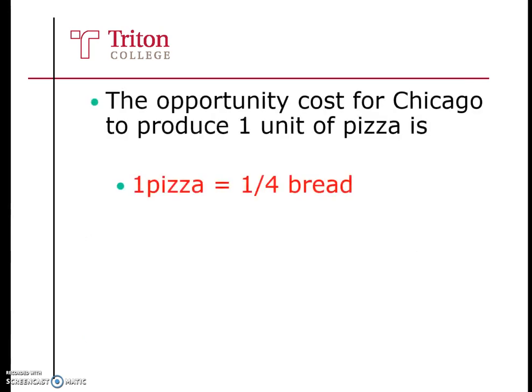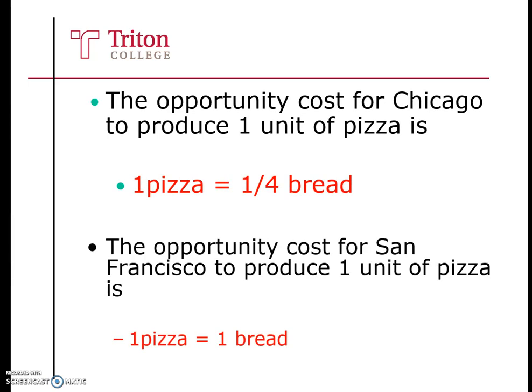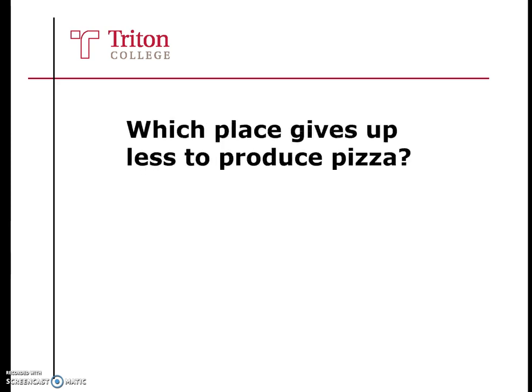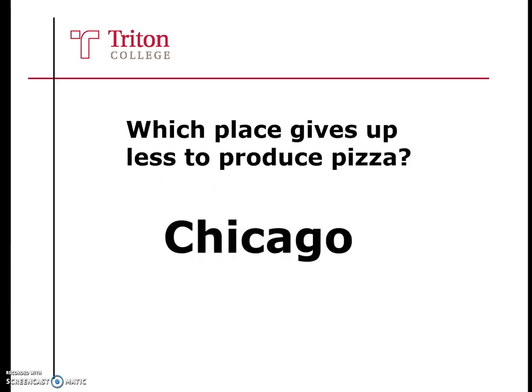Now let's compare. Chicago's opportunity cost for one pizza is a quarter unit of bread. San Francisco is one to one. So which place gives up less to produce pizza? The answer is Chicago. So Chicago has a comparative advantage.